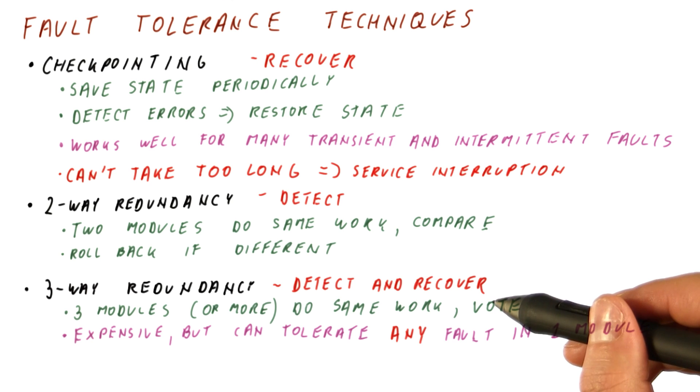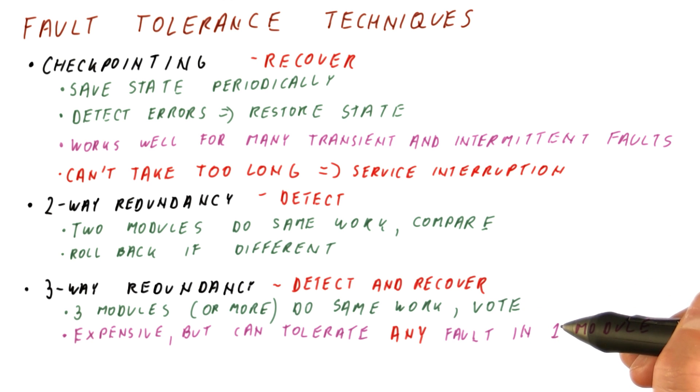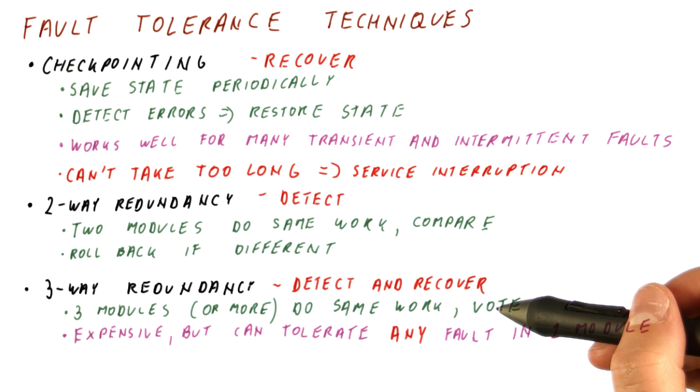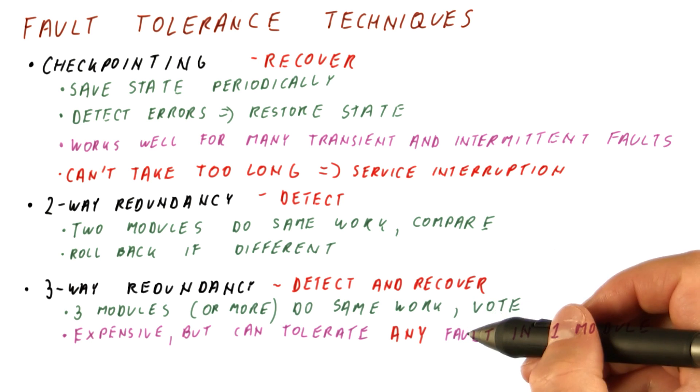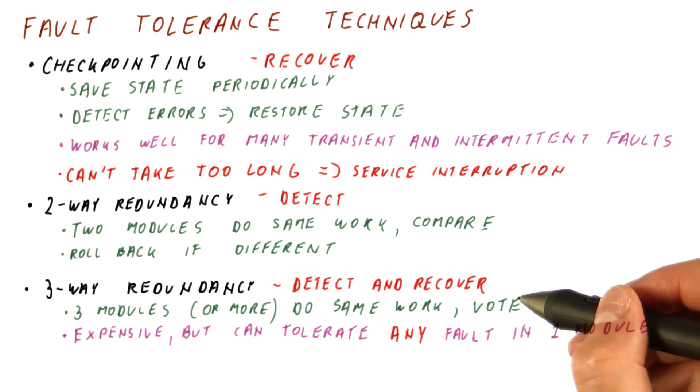Even if that one module is purposely designed to be malicious, the correct two are still going to outvote it and we never see whatever that module is trying to produce in our overall results. But what happens if two modules fail? In that case, we can no longer tolerate that.